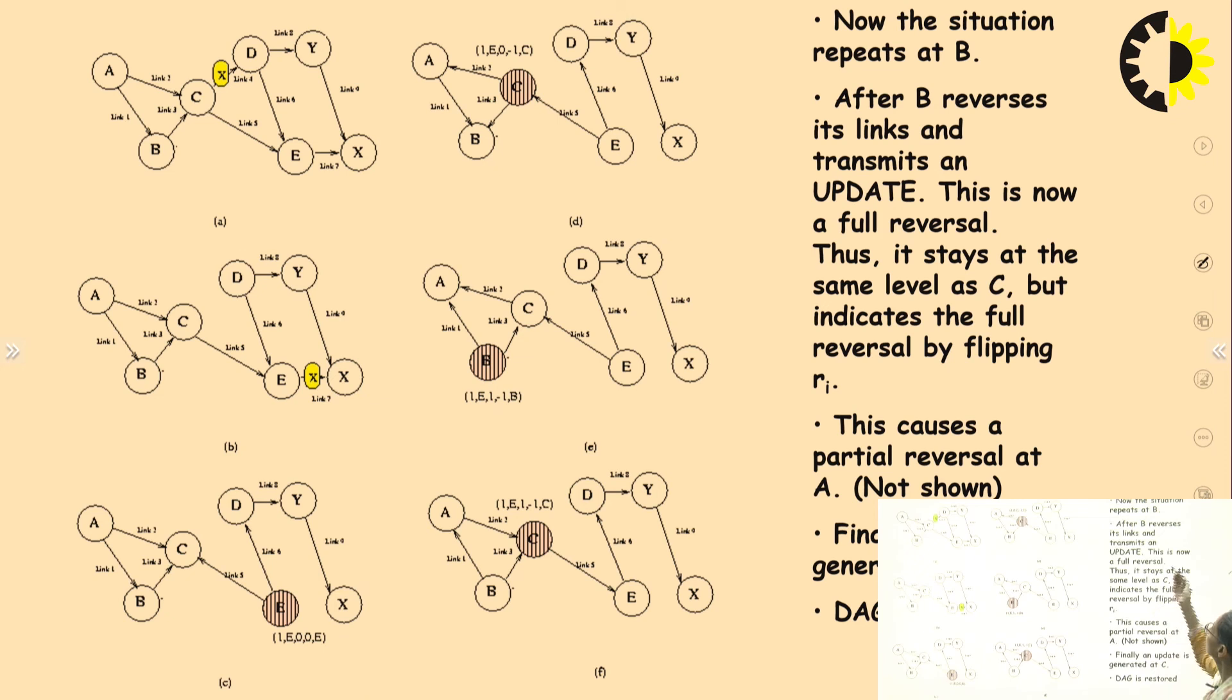This situation now repeats at B. After B reverses its links and transmits an update, this is now a full reversal. Thus it stays at the same level as C, but indicates the full reversal by flipping ri. This causes a partial reversal at A. Finally, an update is generated at C and the DAG is restored. That is how the route maintenance takes place.